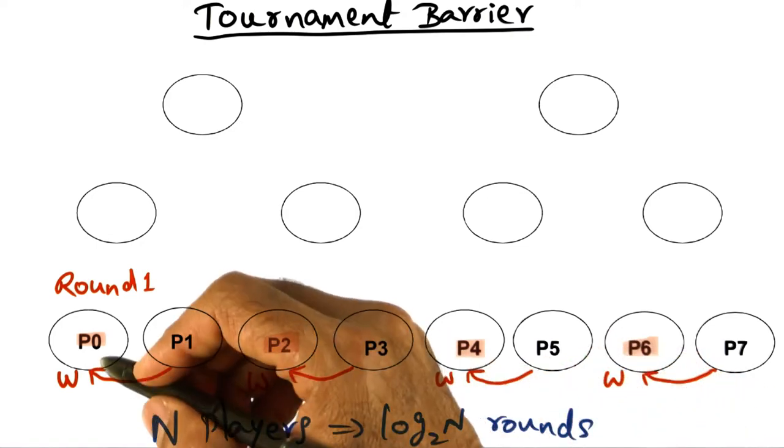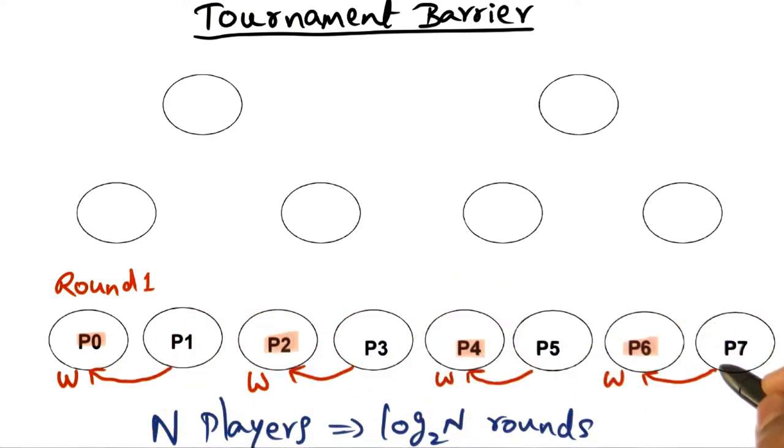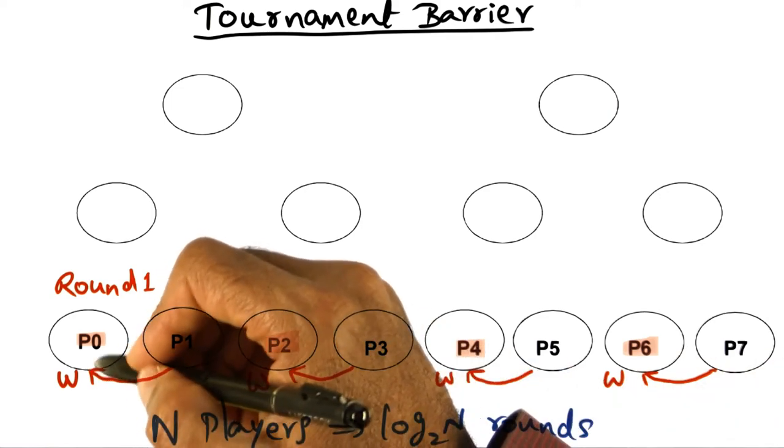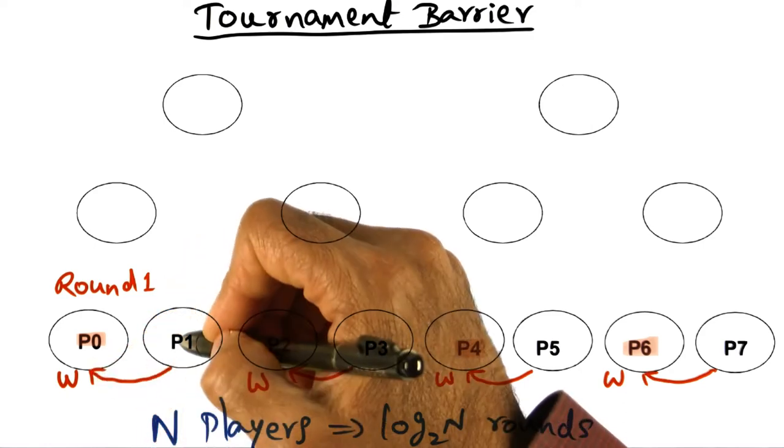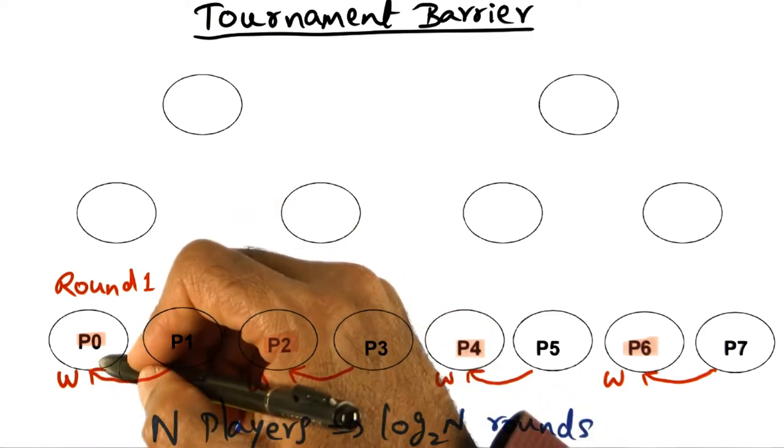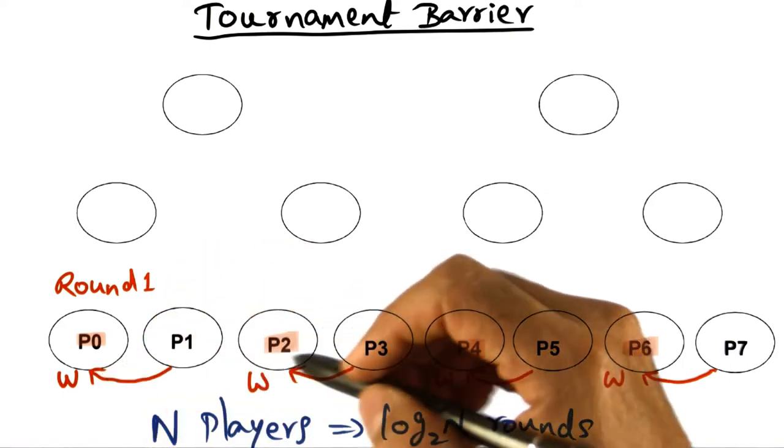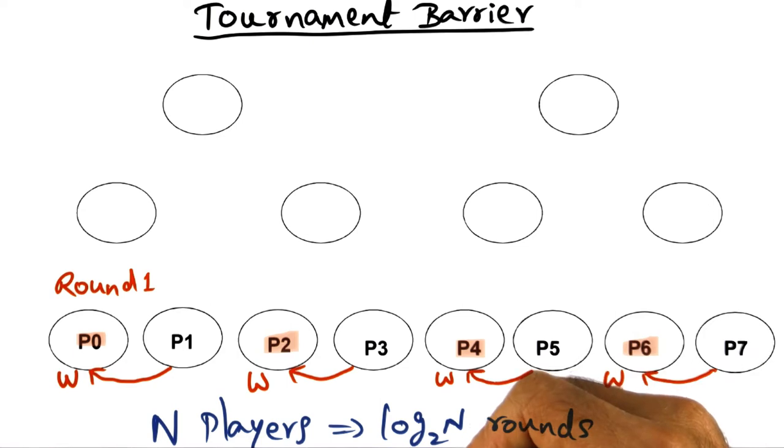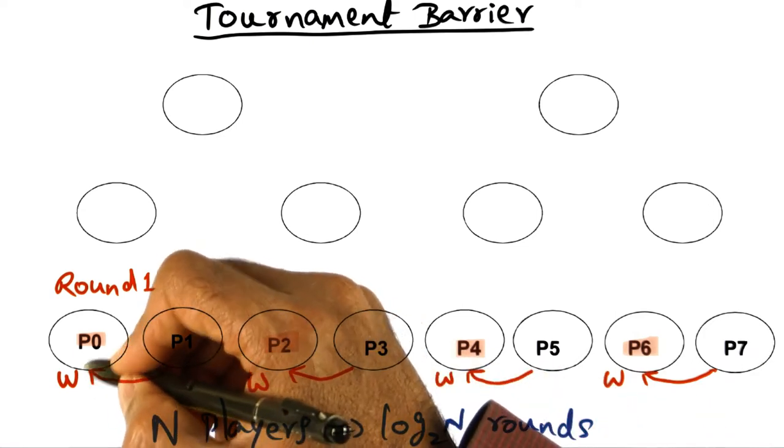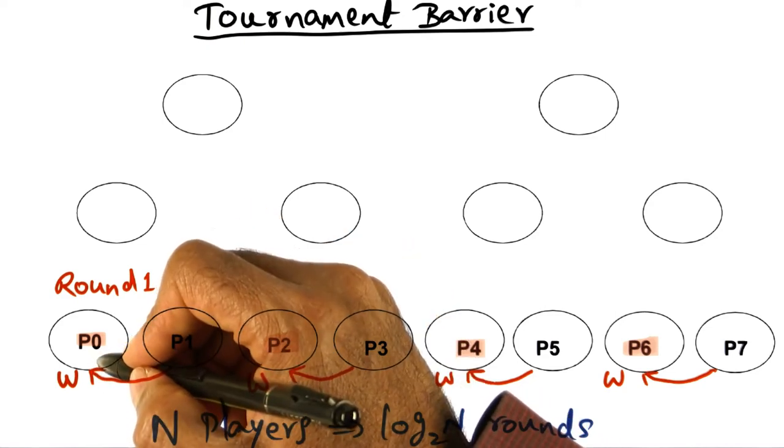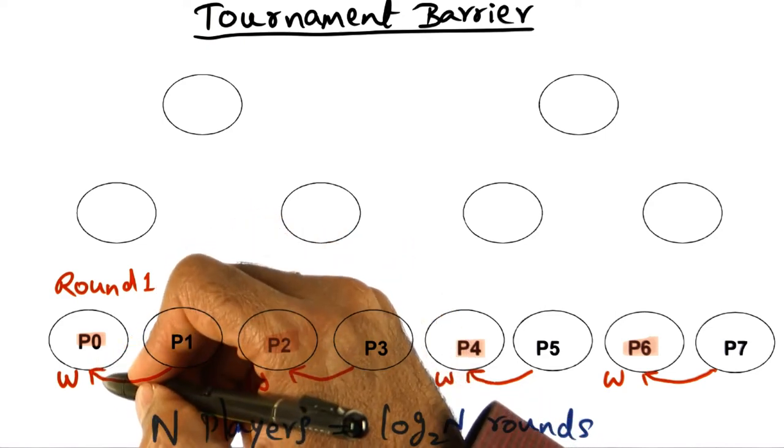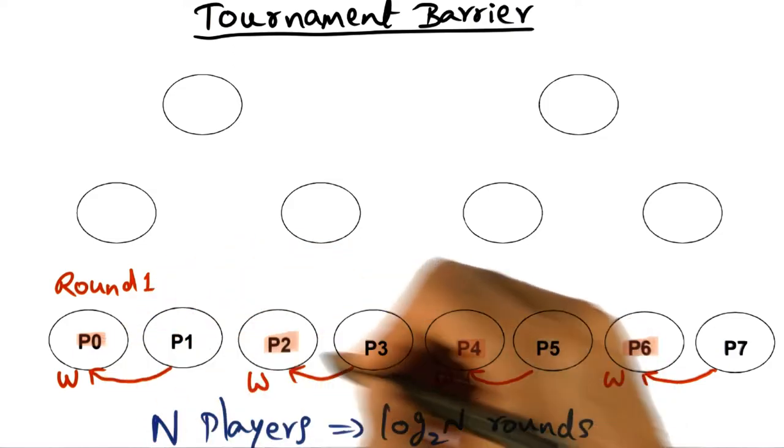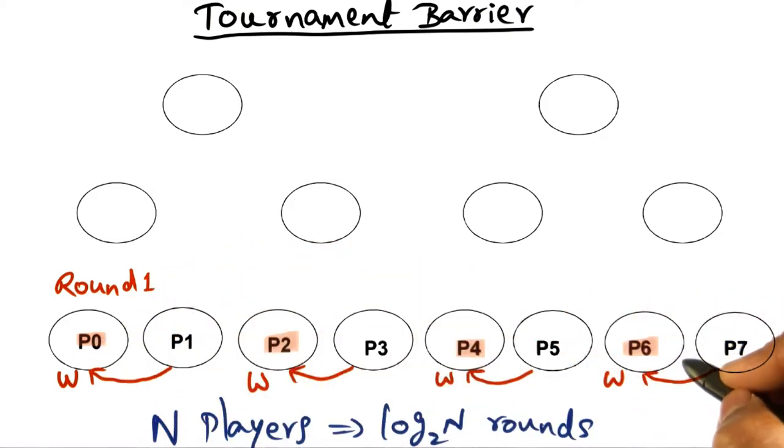The key rationale is the fact that if these processors are executing on a shared memory machine, then the winner can basically sit on his bumper and wait for processor P1 to come over and let him know that he has won the match. P2 can wait till P3 comes over, and so on and so forth. And what that means in a shared memory multiprocessor is that the spin location where P0 is waiting for P1 to come and inform him that he's lost the match is fixed.